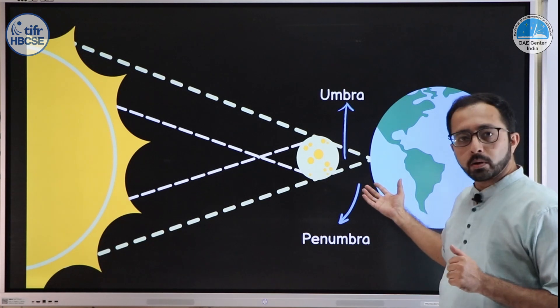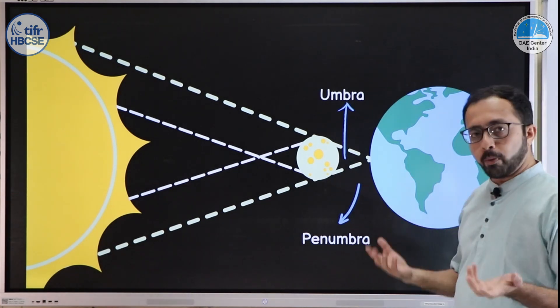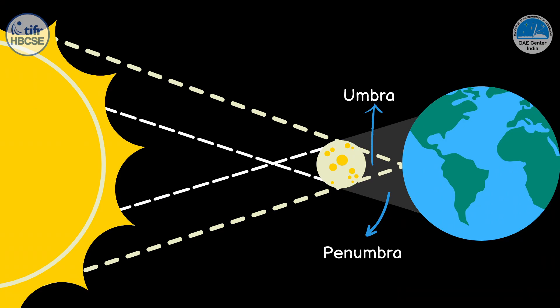This shadow can be divided into two parts: one is the darker umbra, which is in the central cone, and the other is the fainter penumbra, which is seen because of the cross rays at the edges.